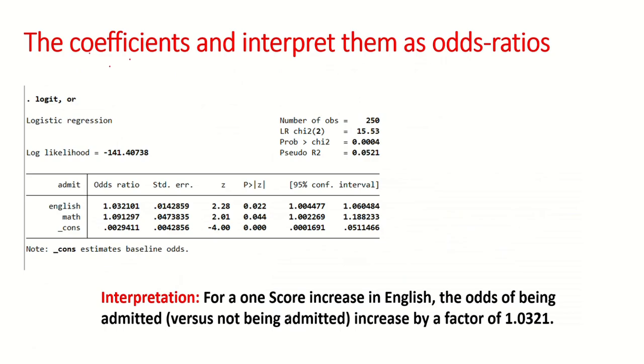We will explain that as: for one score increase in English, the odd ratio of being admitted versus not being admitted increases by a factor of 1.0321. As you can see, the values of odd ratios are given over here instead of coefficient values.